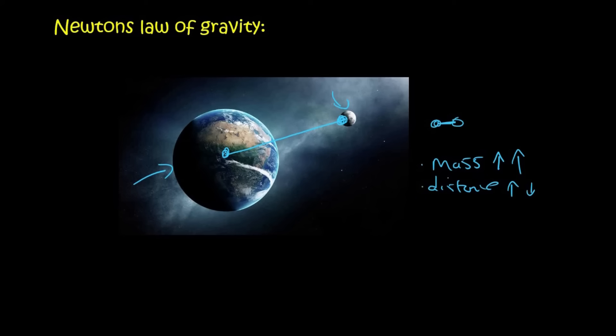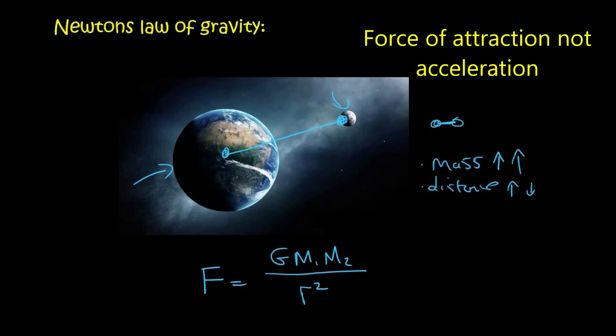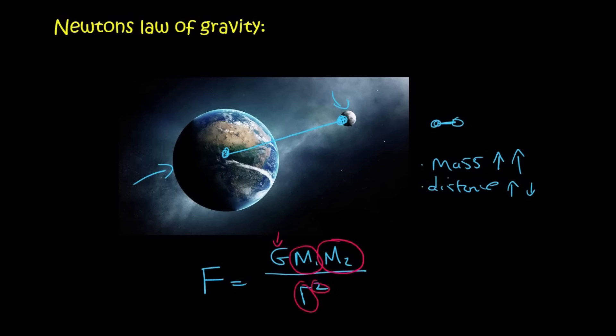And so Newton developed a formula. And this formula will be given to you in the formula sheet. And it goes like this. The force of gravitational acceleration is equal to, now don't worry about this capital G for now, what you do is you take the mass of the first object, and you multiply it with the mass of the second object. And you divide that by the distance between the two centers of the object. And then you square that value.